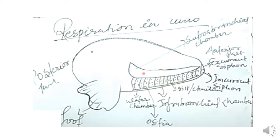In the diagram you can see many elongated linear structures — these are known as gills, or let us say ctenidia. These gills are supplied with blood vessels; inside the blood vessels there is blood. As the water comes inside the water chamber, there is a gaseous exchange between the oxygenated water and these gills. The oxygen from the water is absorbed by the gills, and from the gills the carbon dioxide is released back into the water.